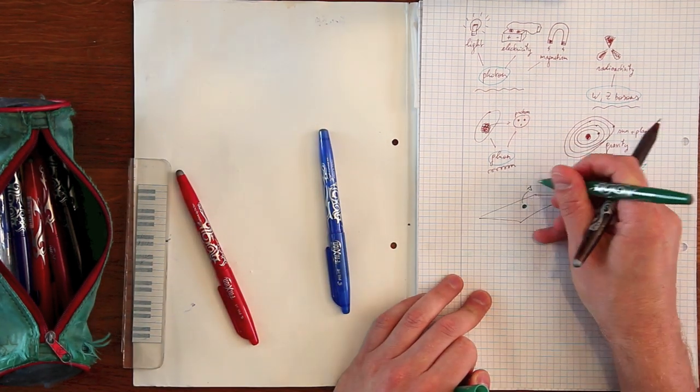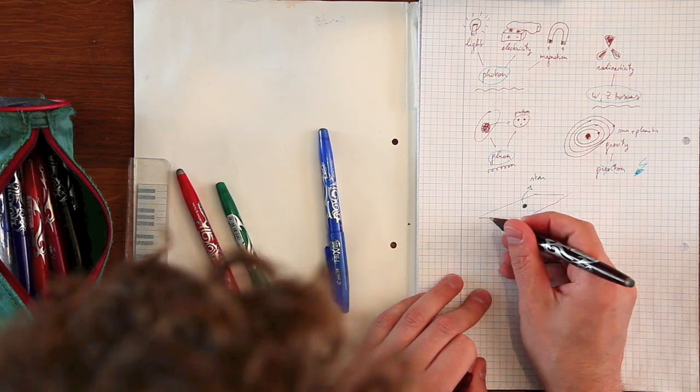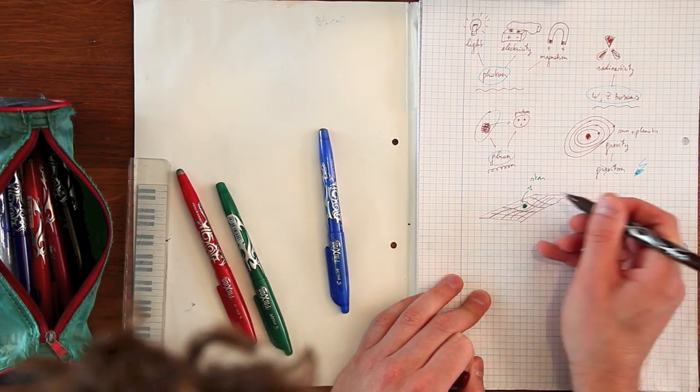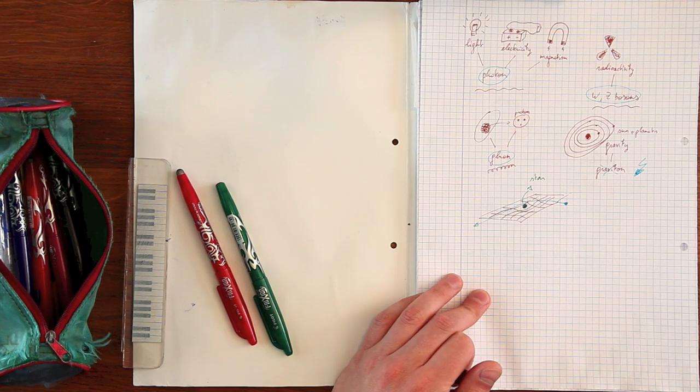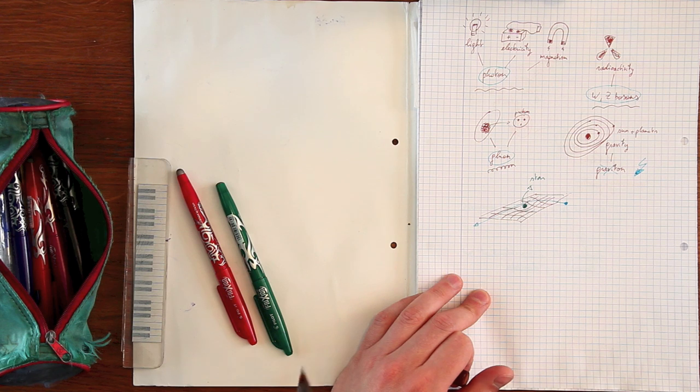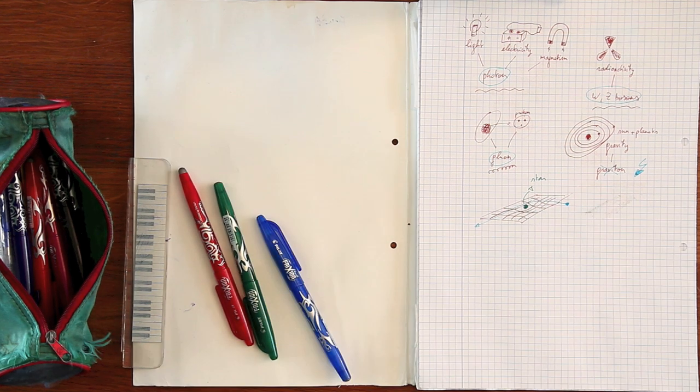Every object with mass, like a star, will deform spacetime, such that every other object with or without mass will have a curved path, whilst it actually tries to go straight. That's why also light gets bent by stars, even if a photon is massless.